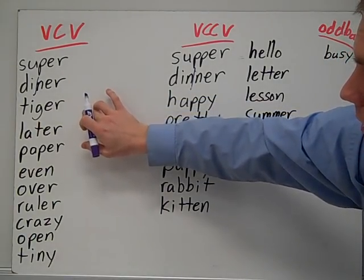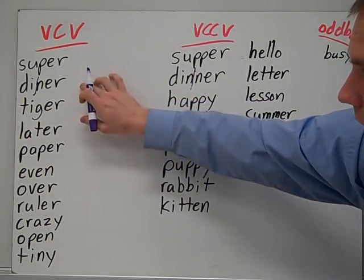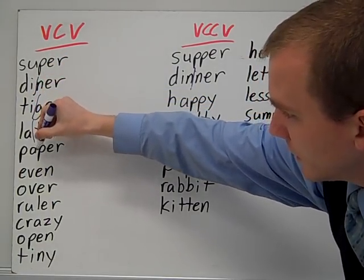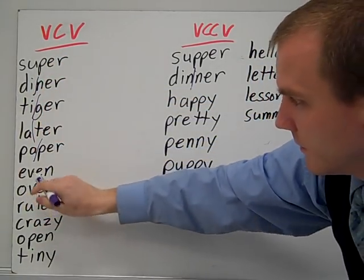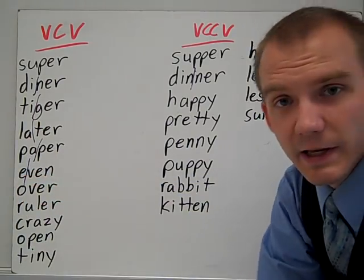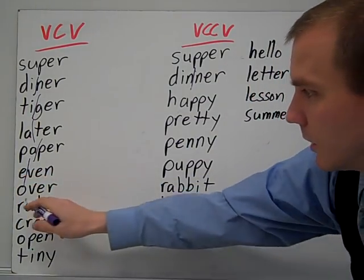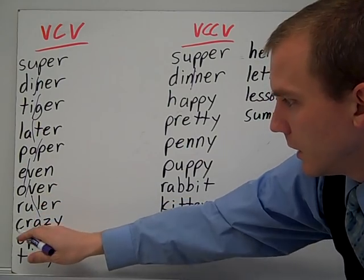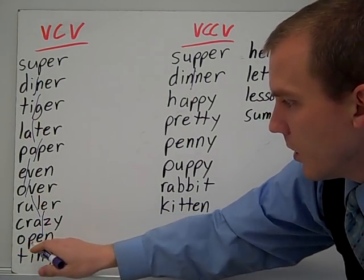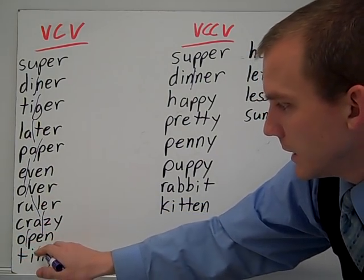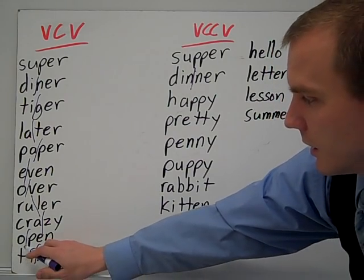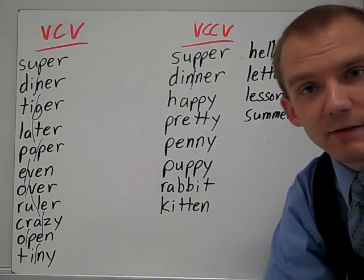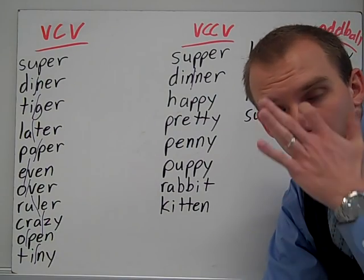Let's continue down these long vowel sounds — go straight down the column. You have tiger, later, paper, even. Notice that this is just your first letter; 'even' is your second syllable. Over, ruler, crazy, open, tiny. In all of them, you have vowel-consonant-vowel, and your juncture comes after the first vowel, there in the middle of the word.